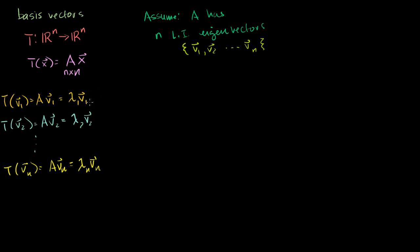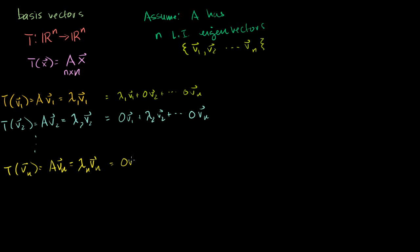Now, what are these also equal to? This is equal to — and this is probably going to be obvious to you — lambda 1 times V1 plus 0 times V2 plus all the way to 0 times Vn. And this right here is going to be 0 times V1 plus lambda 2 times V2, plus 0 times all the other vectors. And then the last one is 0 times V1 plus 0 times V2, plus lambda n times Vn. The reason I wrote that is we're going to take this as a basis and find coordinates with respect to it. So this guy's coordinates will be lambda 1, 0, 0, because those are the coefficients on our basis vectors.